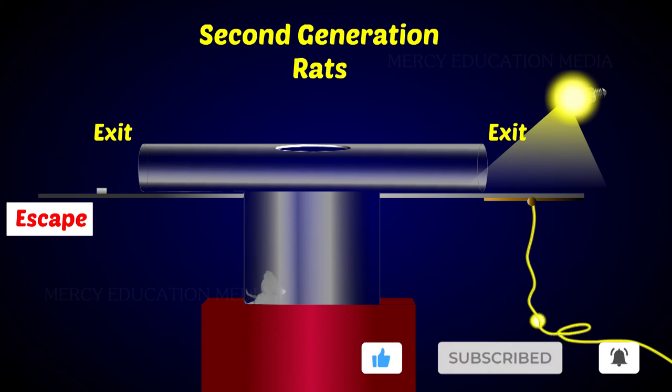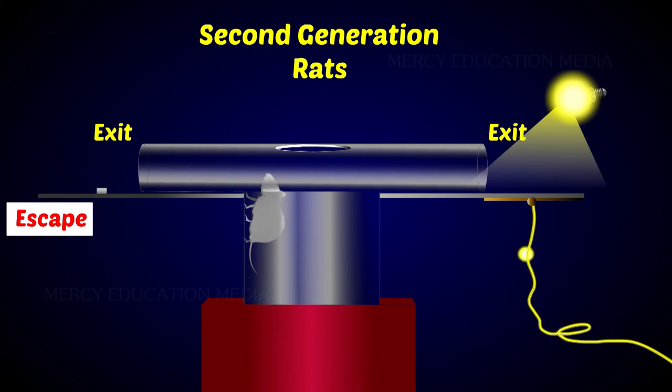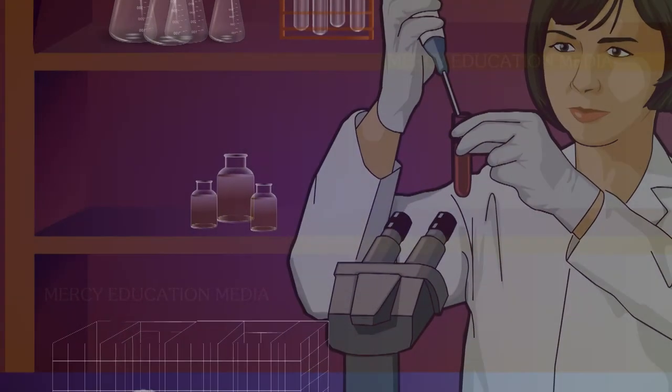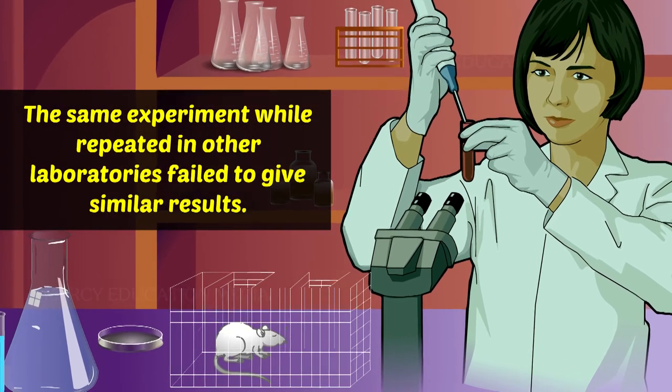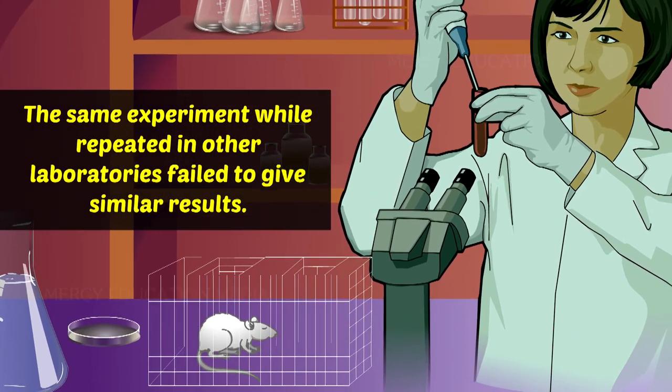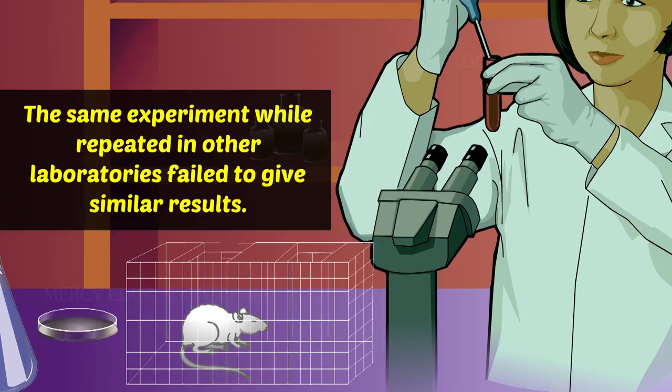Thus, he concluded that learning is an acquired character. Later, workers found some technical mistakes in the work of McDougall. The same experiment, while repeated in other laboratories, failed to give similar results.